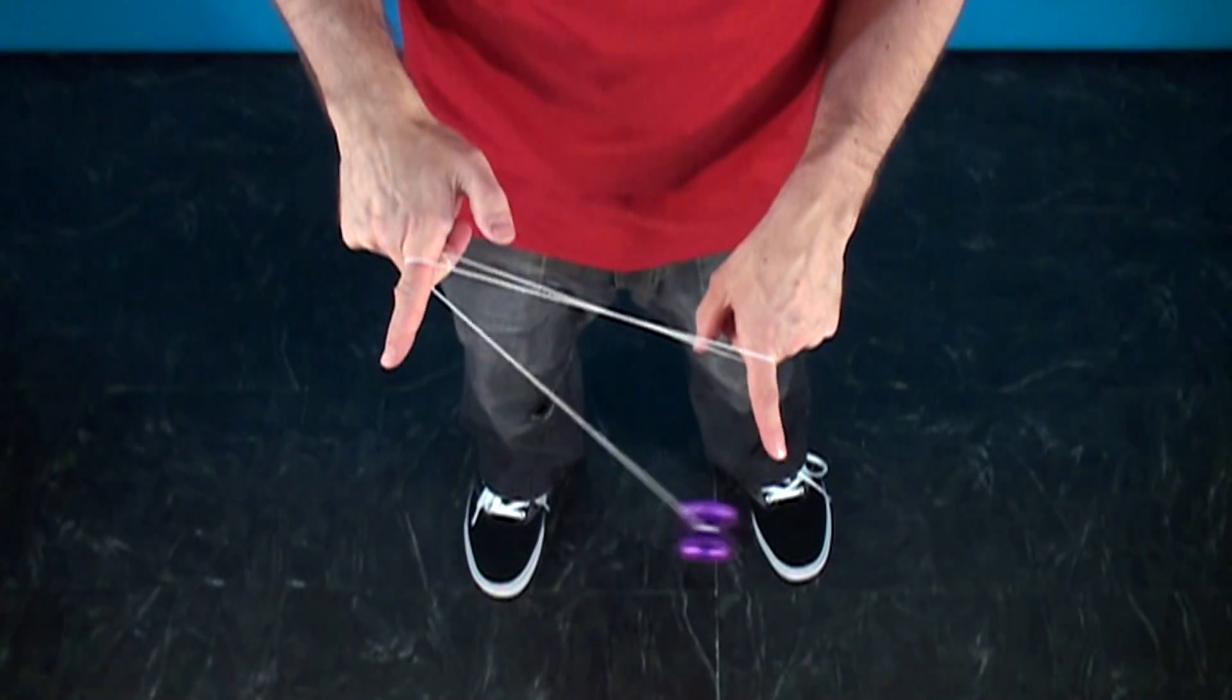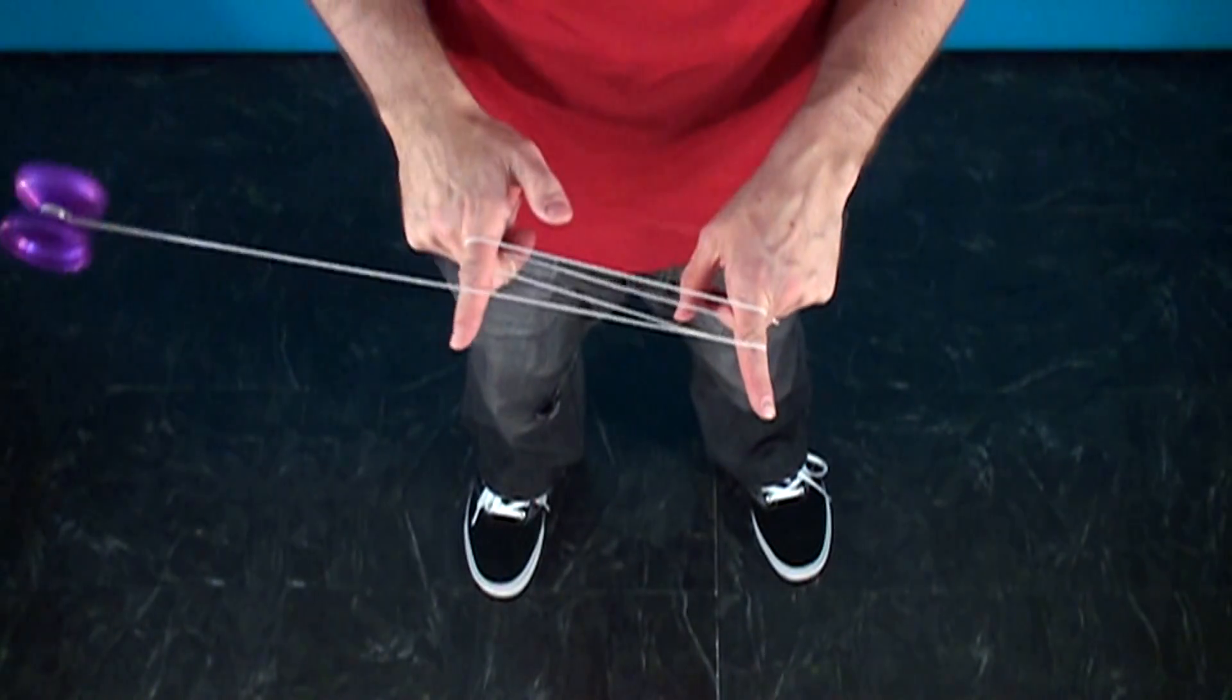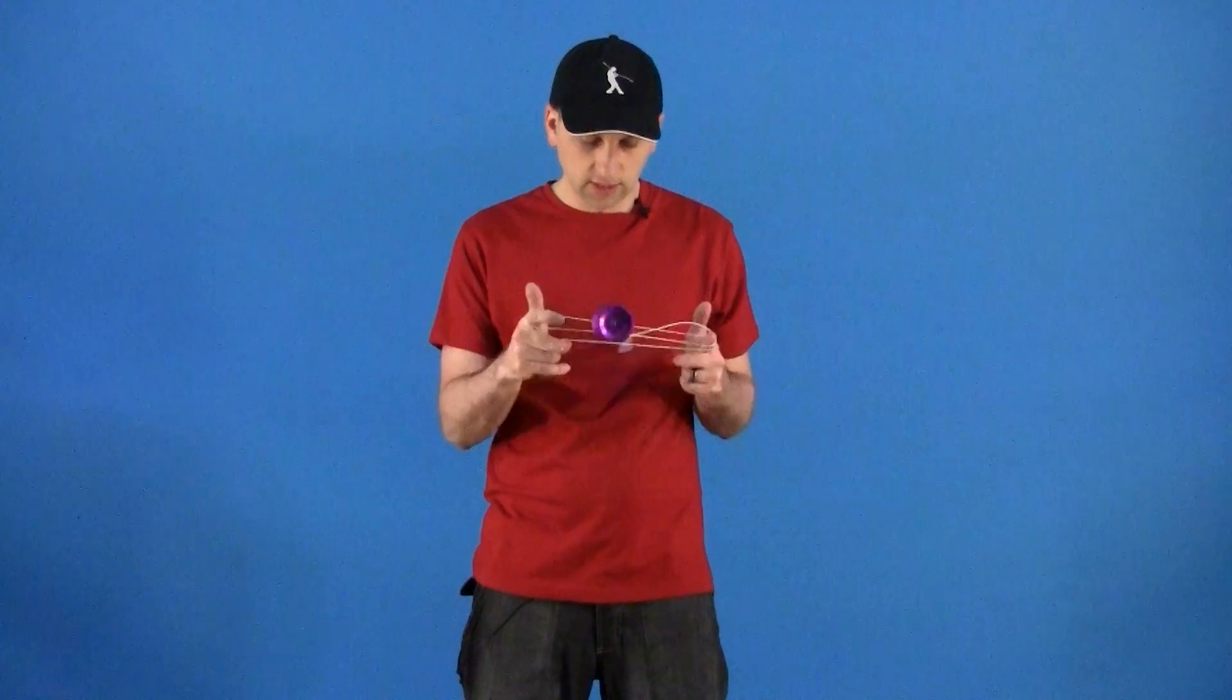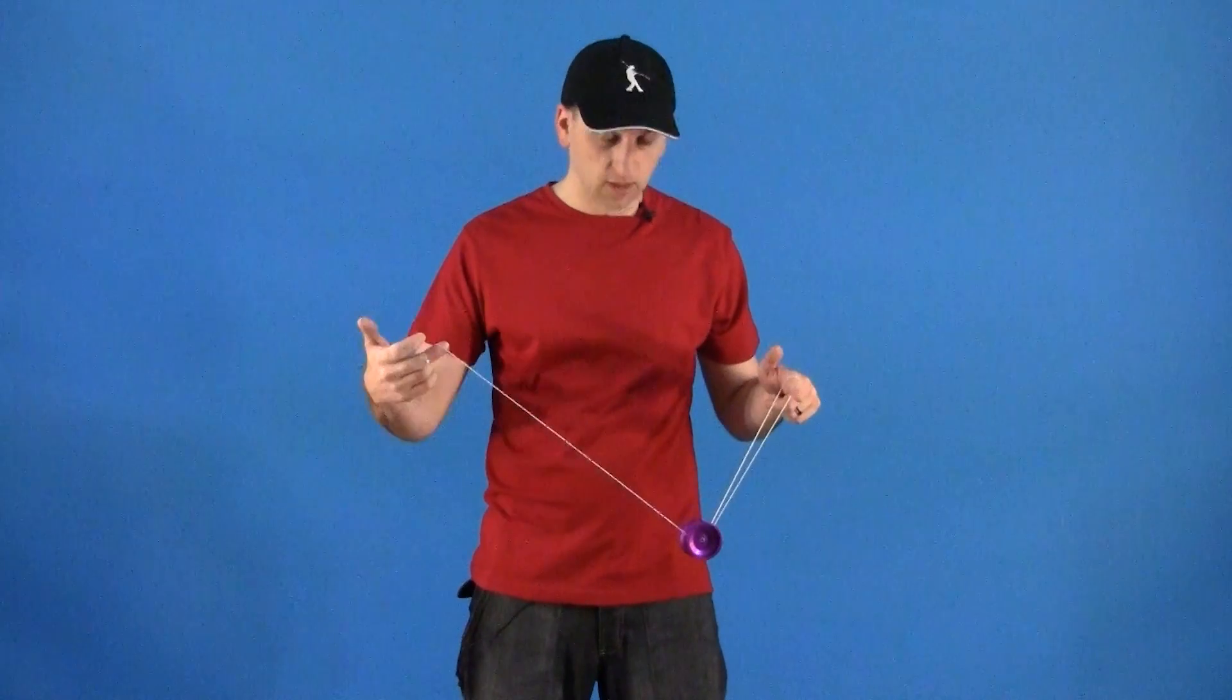When you do this you want to make sure to try to keep the strings spread apart on your fingers just like this. That will make the descending hops that you do off of this trick quite a bit easier.